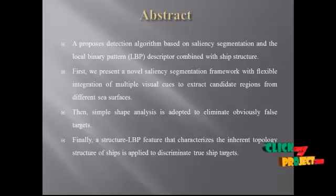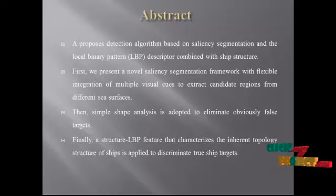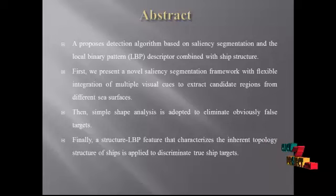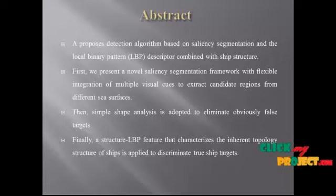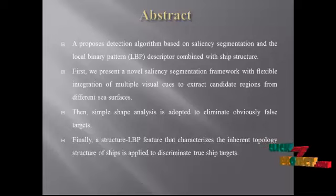First, we present a novel saliency segmentation framework with flexible integration of multiple visual cues to extract candidate regions from different sea surfaces. Then, simple ship analysis is adapted to eliminate obviously false targets. Finally, a Structure LBP feature that characterizes the inherent topology structure of the ship is applied to discriminate true ship targets.